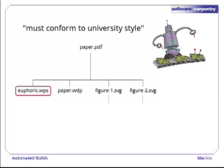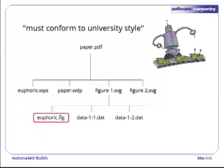Here's the problem. On our laptop, that file lives in C:/papers. On the machine we use in the lab, though, it's in /lib/styles. We could create a directory called /lib/styles on our laptop and put a copy of euphoric.wps there. But the university also has a style guide for diagrams in a file called euphoric.fig. On our laptop it's installed in C:/papers, but it's in lib/styles in the lab.